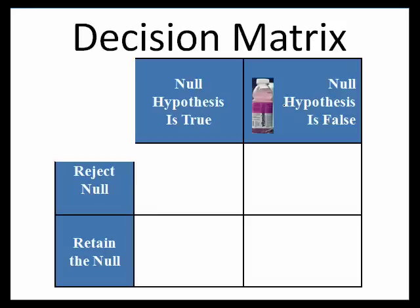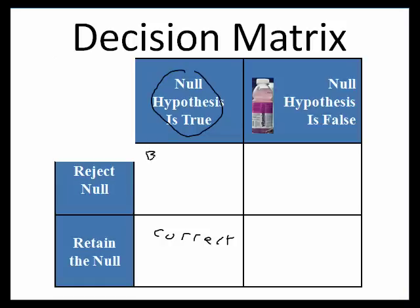Let's look at our decision matrix — possible scenarios, possible decisions, and what they mean. If the null hypothesis is true — vitamin water is no better than tap water — and you retain the null because there's not enough evidence to reject it, you made a correct decision. However, if the null hypothesis is true but due to sampling error you happened to start with a group that was really bright or really impaired, leading you to incorrectly reject the null, that's a Type 1 error — your bogus evidence was the extreme sampling error.